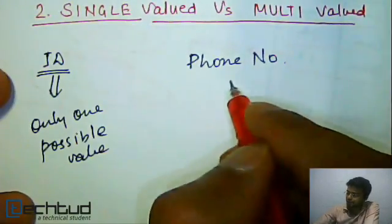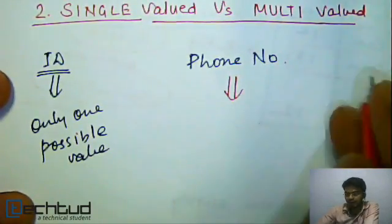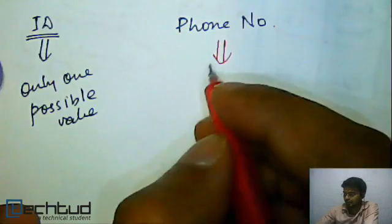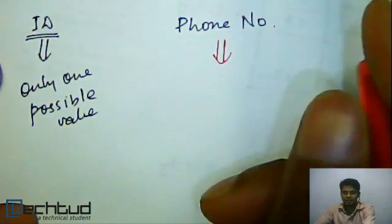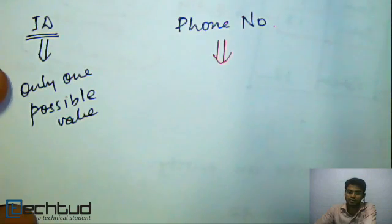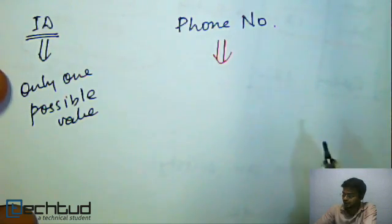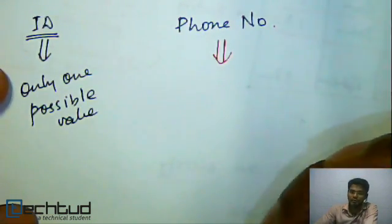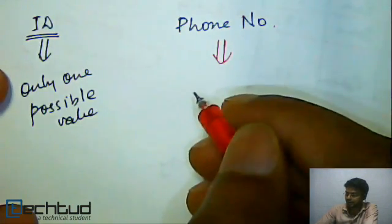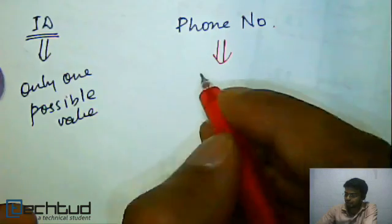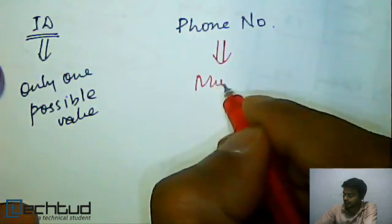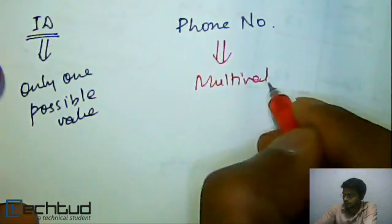While phone number may have multiple values, a student may have multiple phone numbers like his residential phone number. Even in residential he may have two or three connections, so he may have different phone numbers. Or he may have a mobile number, another is landline number, etc. So he may have multiple phone numbers. So this is multi valued.